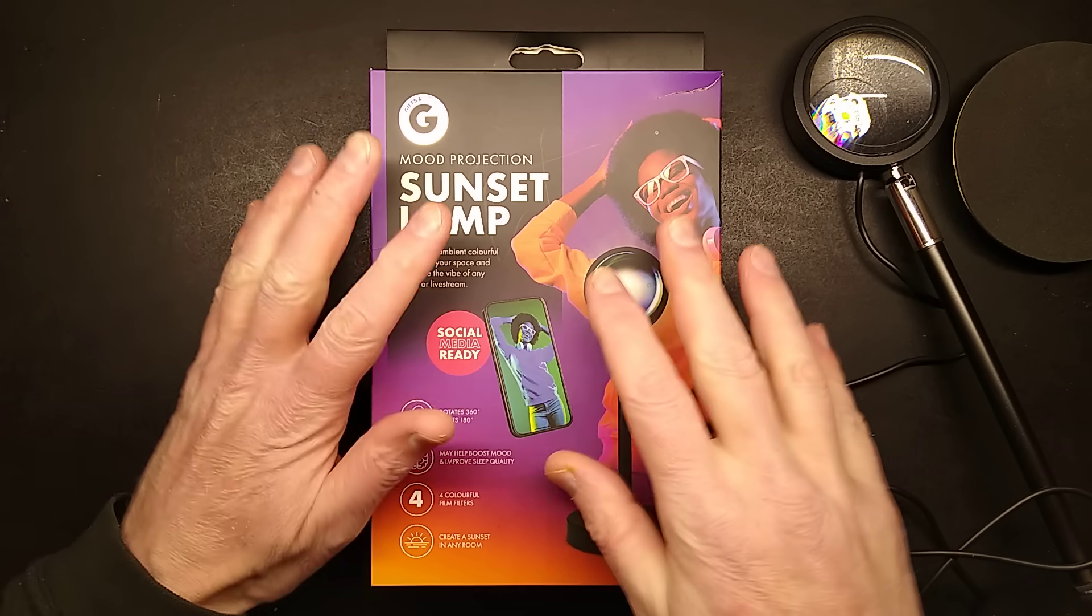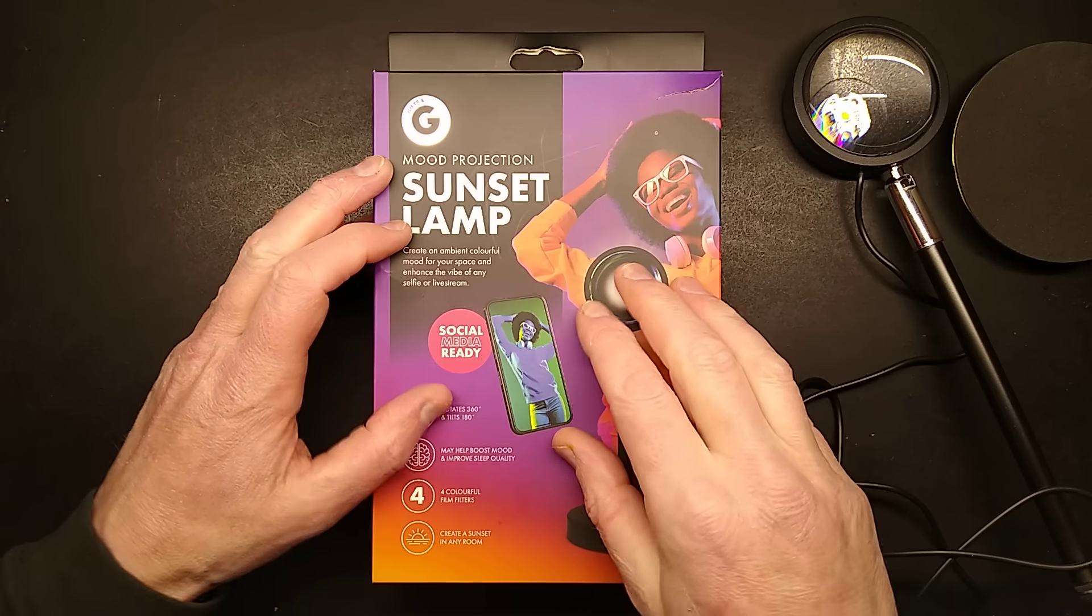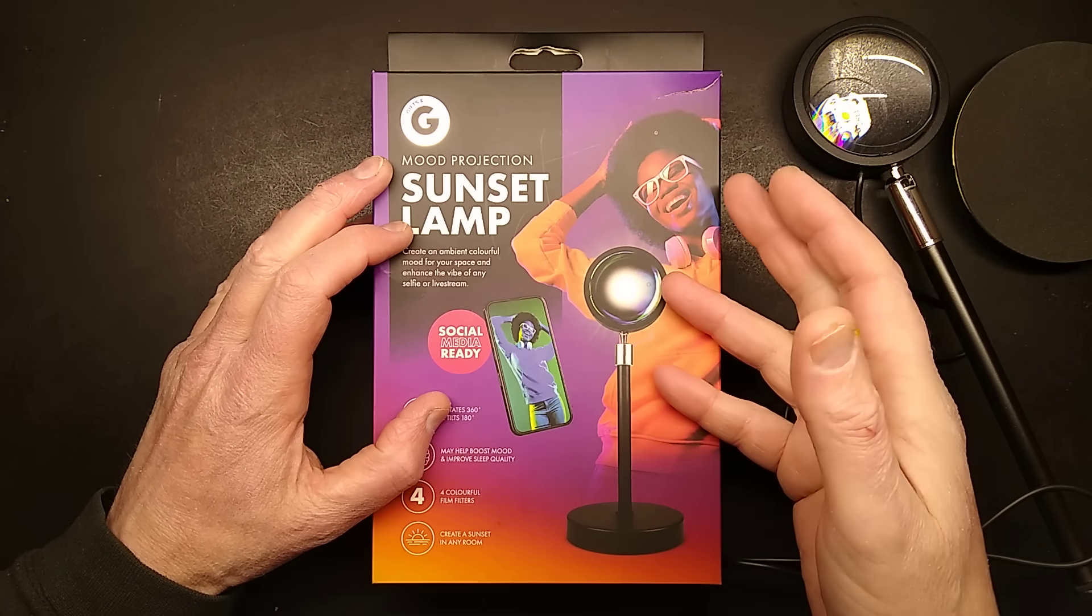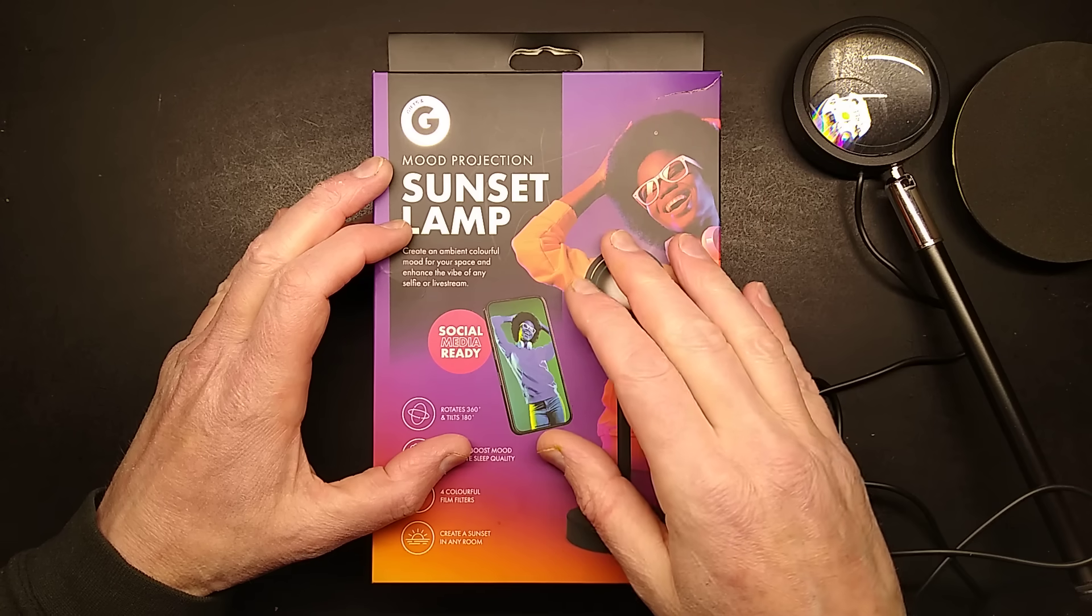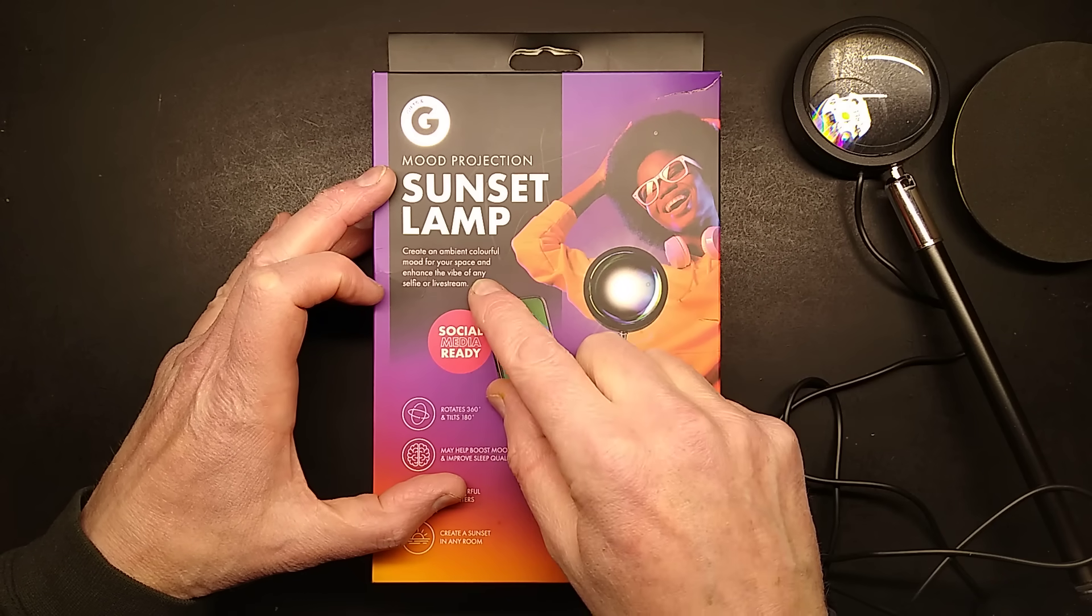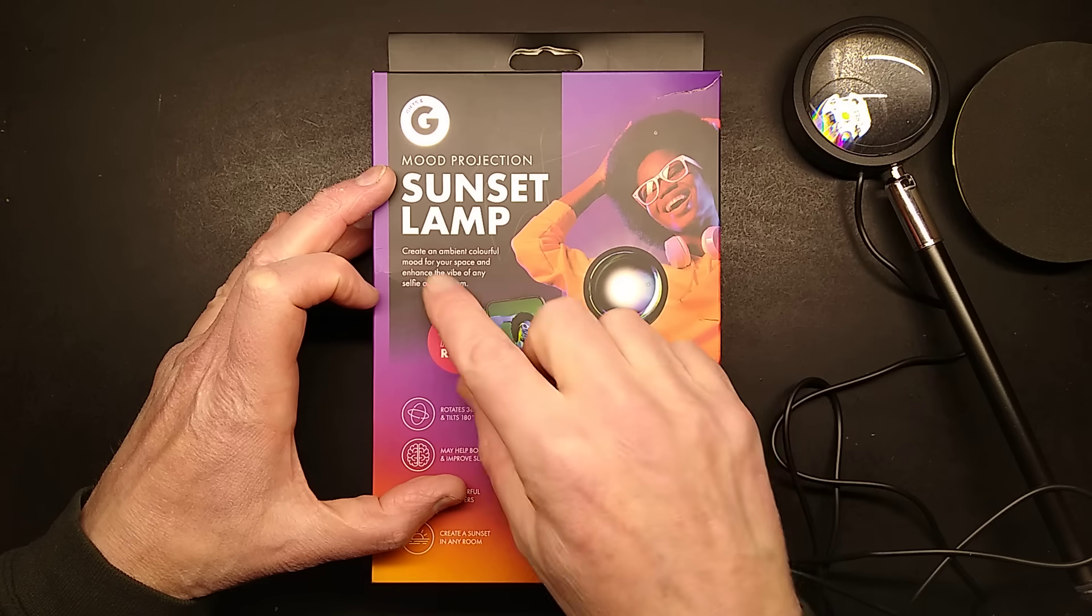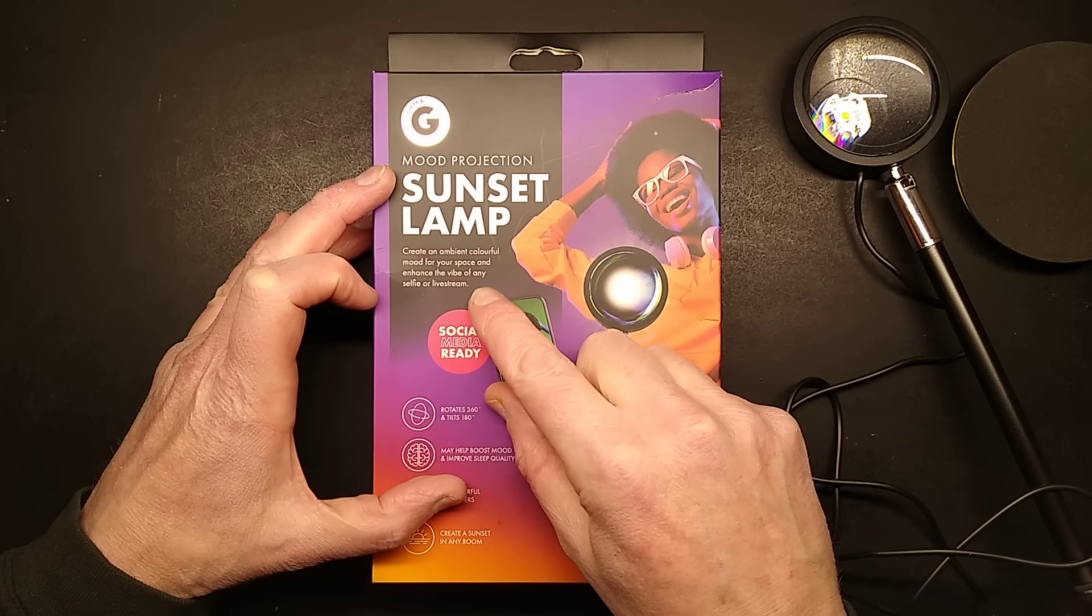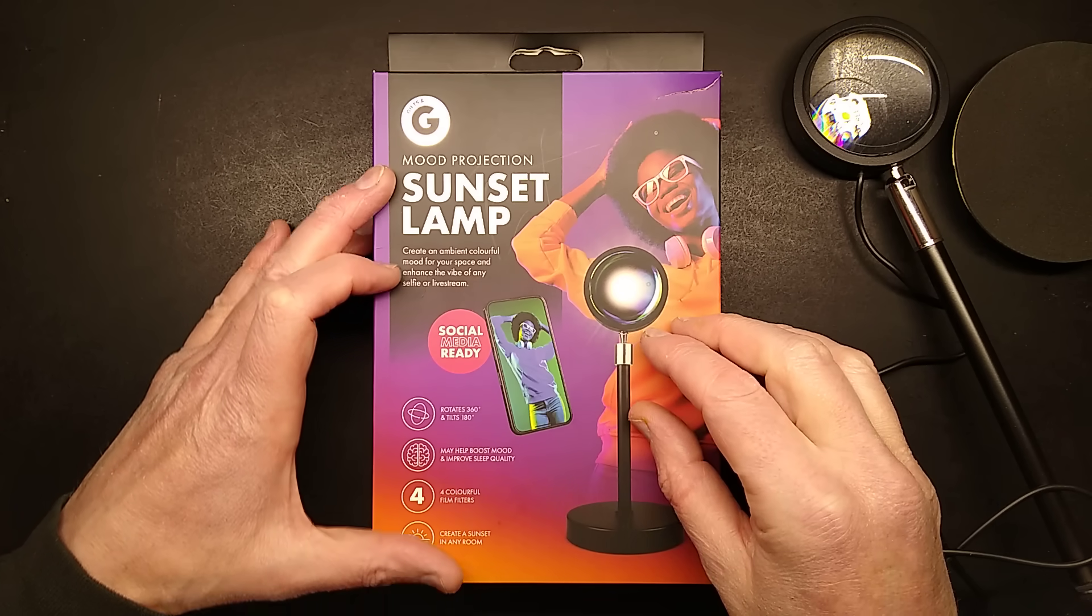Temporary filming location, so things will look and sound different. Let's take a look at another product from a UK outlet called One Beyond, but this is probably available from other places around the world. It's the Mood Projection Sunset Lamp, and it says create an ambient color mood for your space and enhance the vibe of any selfie or live stream.